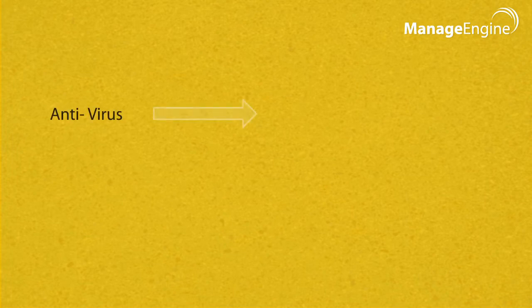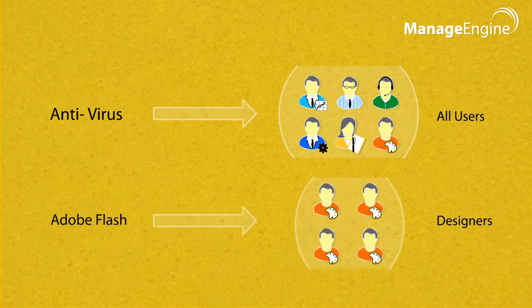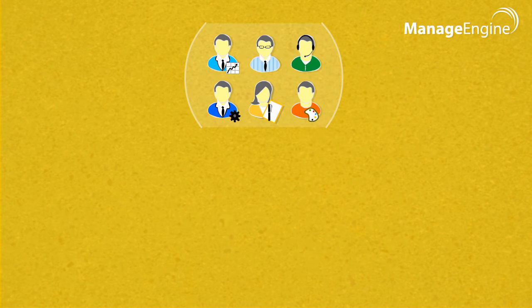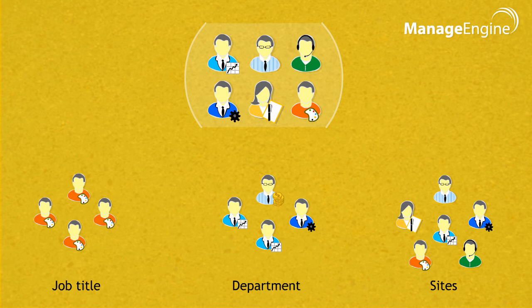Sometimes the service that you offer will cater to the needs of all users, and in some other cases it might be needed by only a specific list of users. In these cases, you can use different groups based on job title, department, or even sites, and list the specific service available for these users.